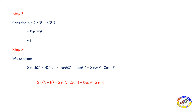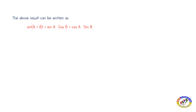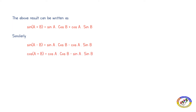The compound angle formulas are: sin(A + B) = sin A cos B + cos A sin B; sin(A - B) = sin A cos B - cos A sin B; cos(A + B) = cos A cos B - sin A sin B; cos(A - B) = sin A cos B + cos A sin B.